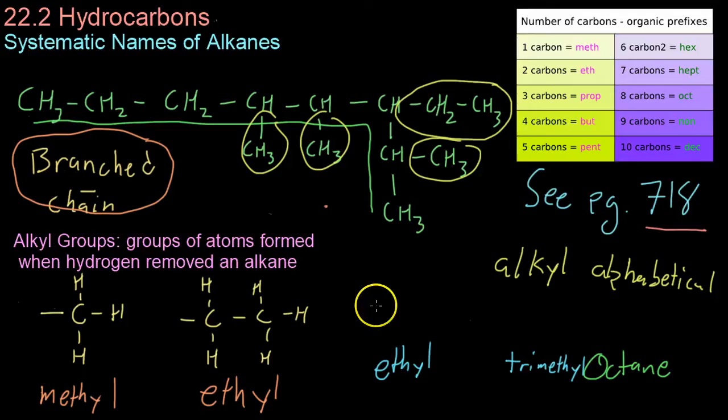The last thing you have to indicate is where the groups actually attach. For example, because we have trimethyl groups, that just tells us that we have 3 methyl groups in the compound. They could come off here or here. But, we have to indicate that they come off at these 3 particular spots. And, the way you do that is by numbering your carbons. And, there's 2 ways to number it. You could either come down this way, starting with 1, 2, 3, etc. Or, you can come up this way, 1, 2, 3, 4, 5, 6, 7, and 8. And, this is the correct way to number it.